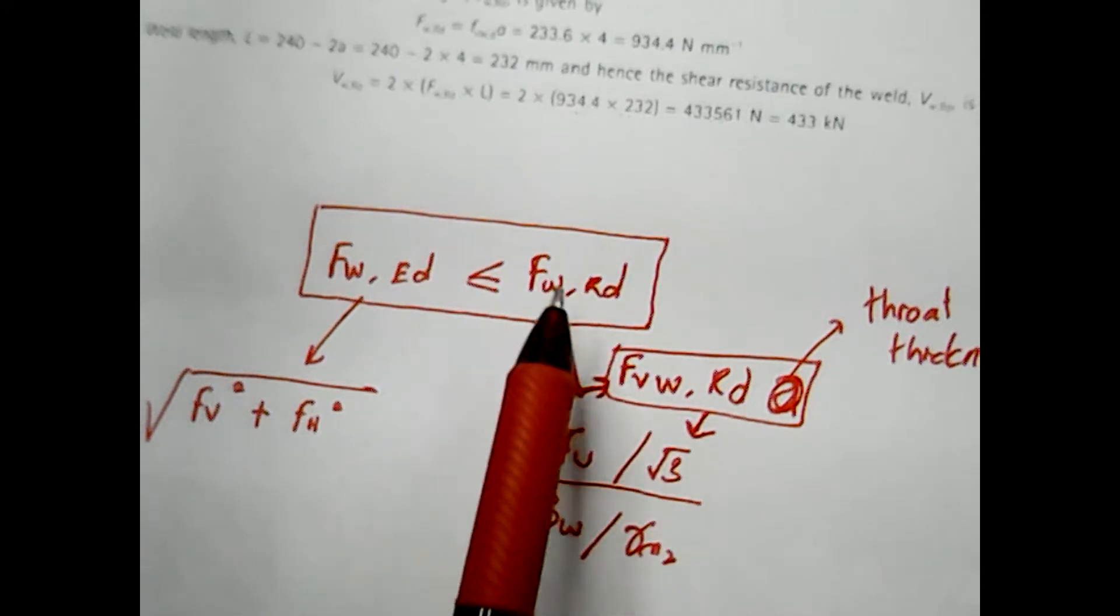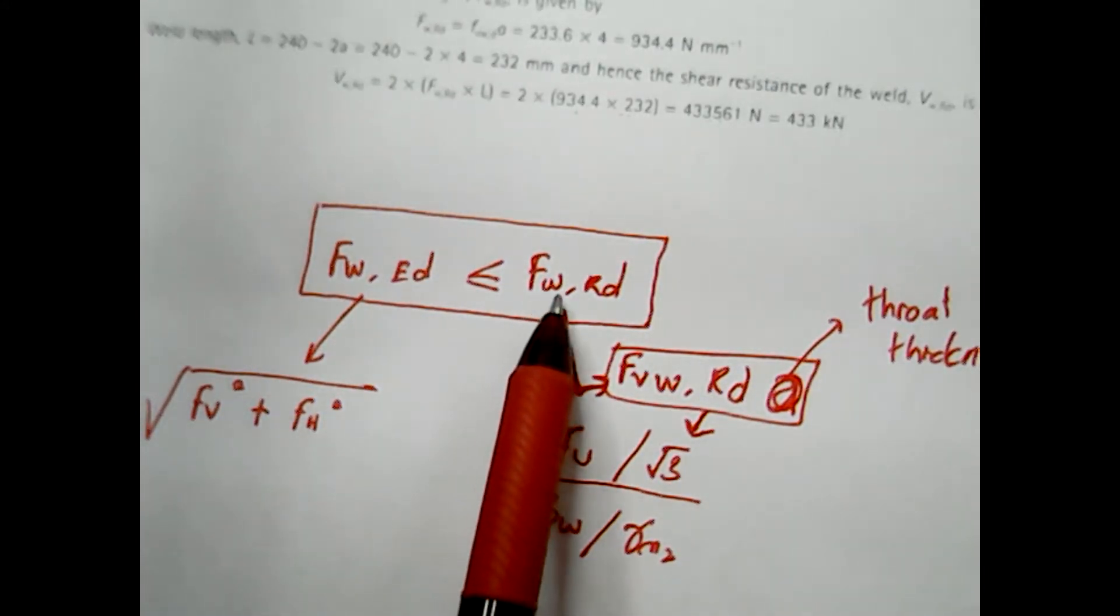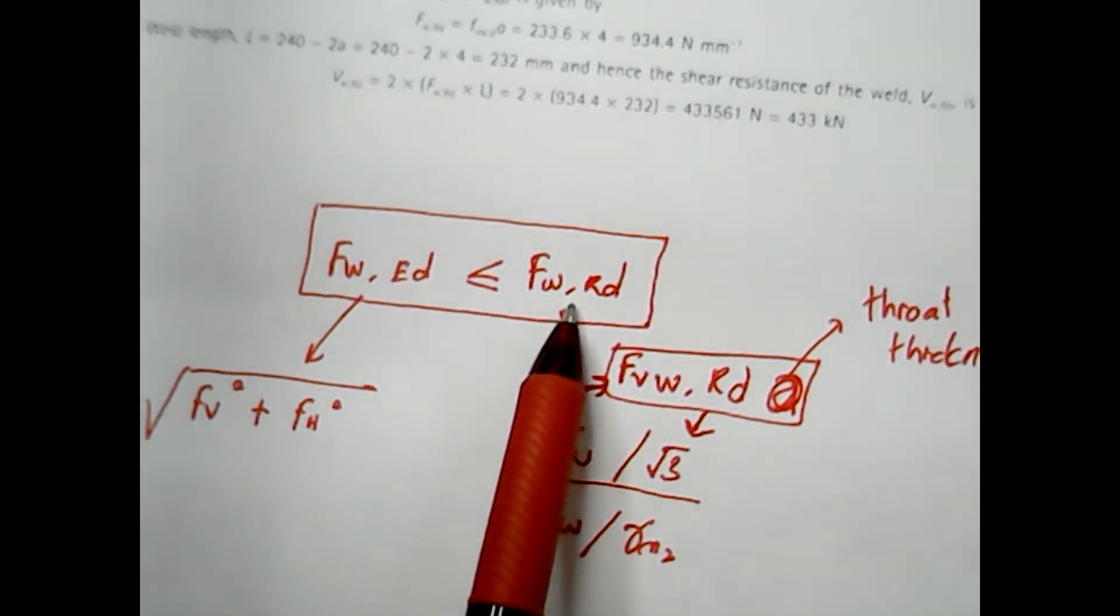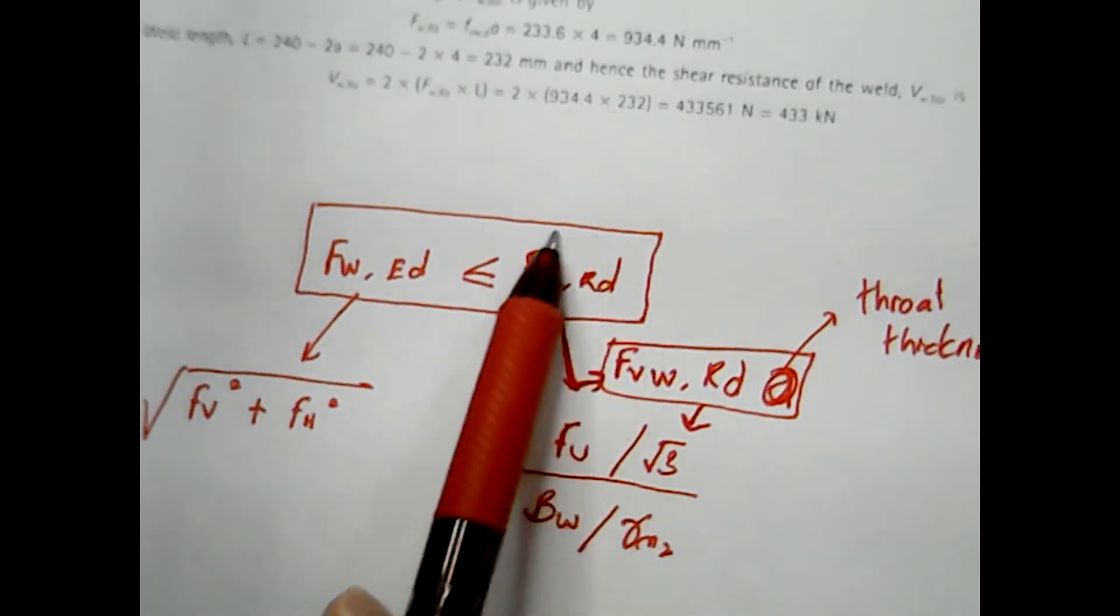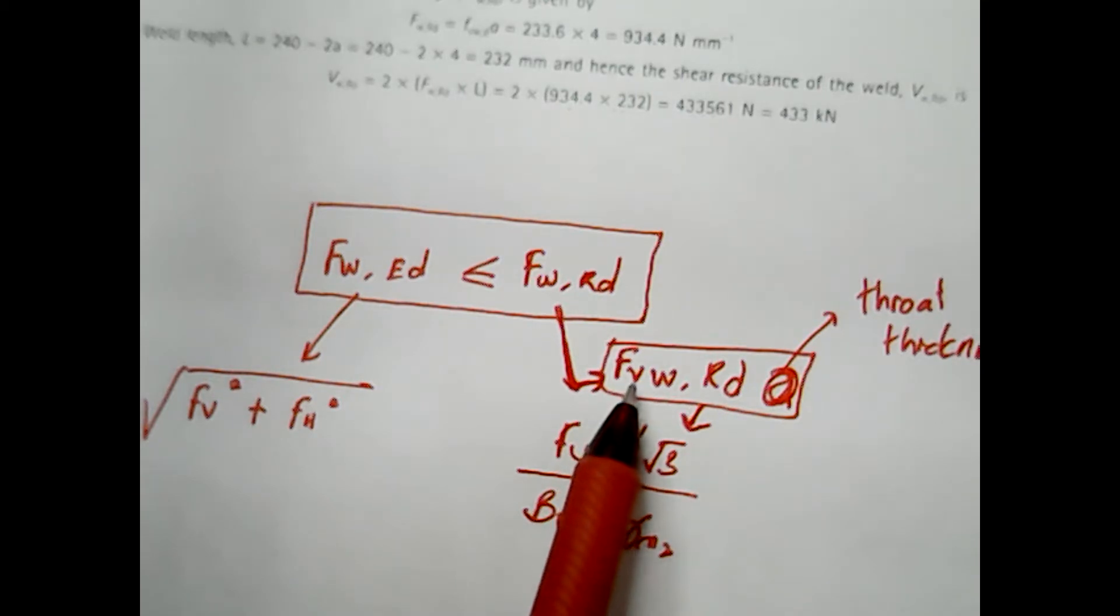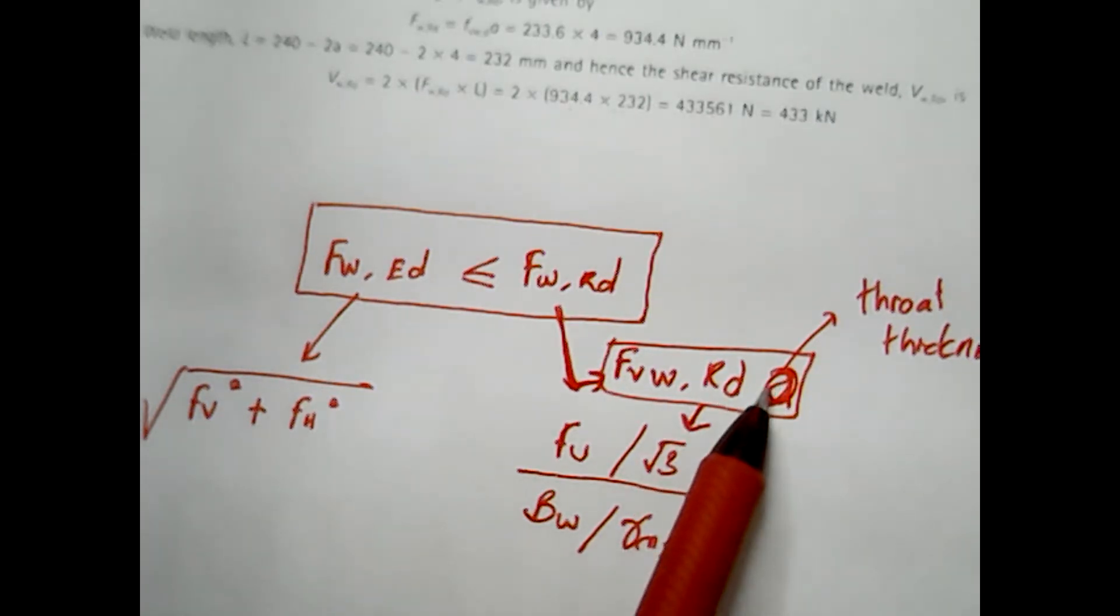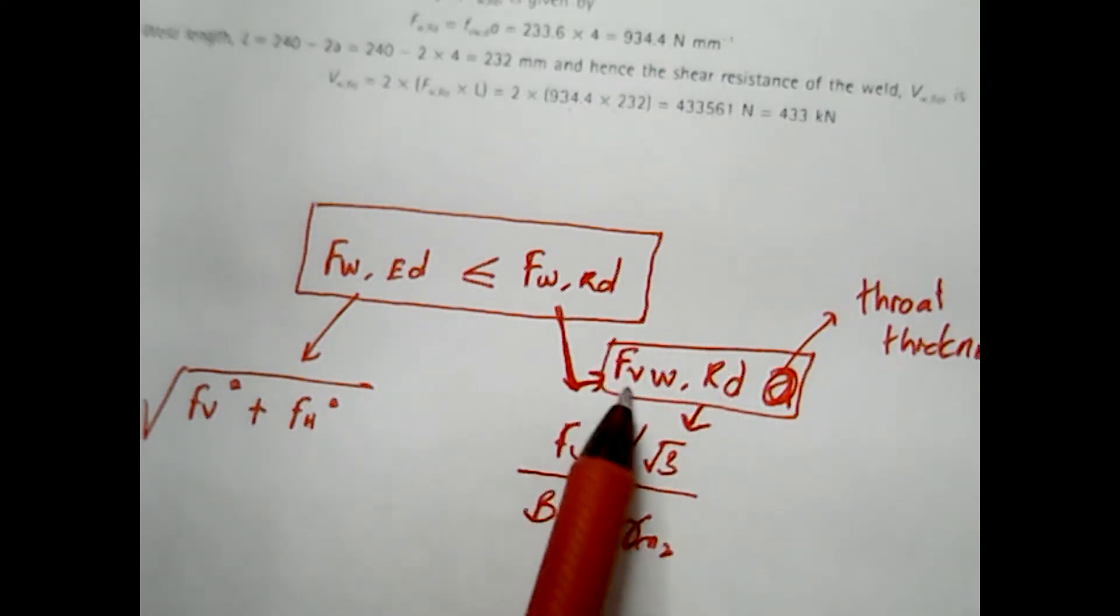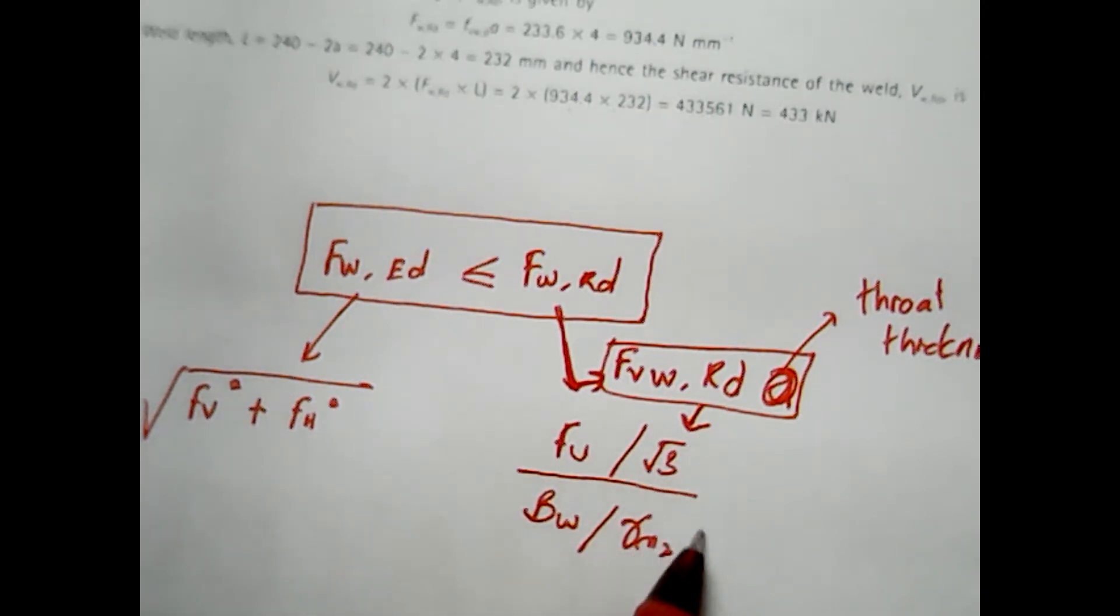To determine that we need to determine the Fw,Rd which is the design resistance of weld per unit length. Design resistance of weld per unit length is given as Fvw,Rd, which is the design shear strength of the weld times the throat thickness. To get the design shear resistance it is calculated by adapting these formulations.